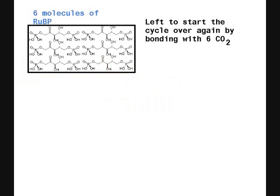The 6 molecules of RuBP are put back into Phase 1 of the Calvin Cycle to react with 6 more molecules of carbon dioxide, starting the cycle all over again.